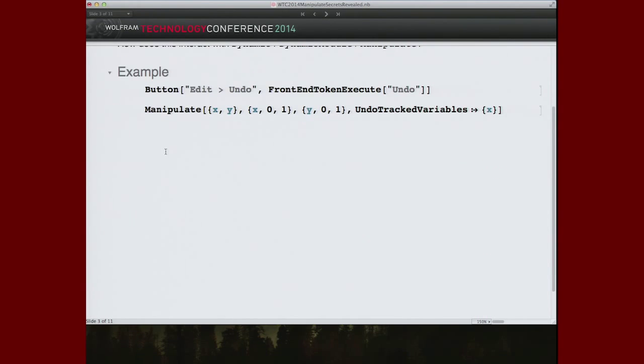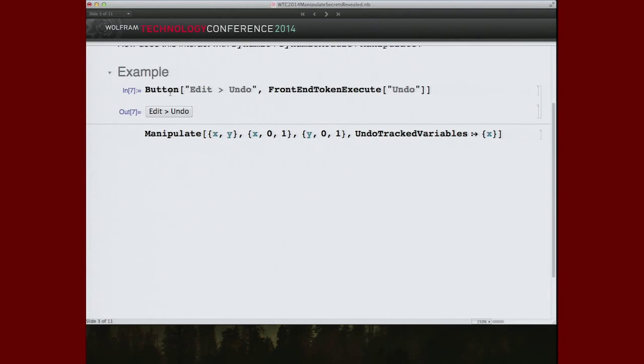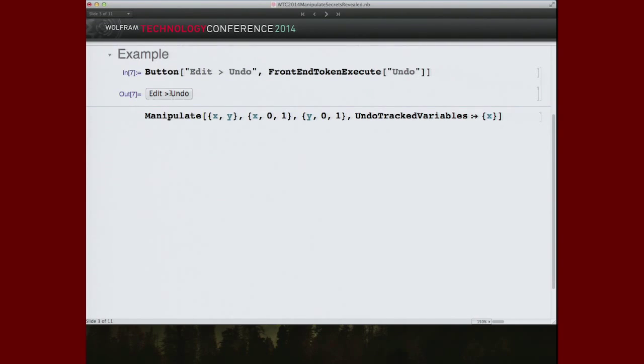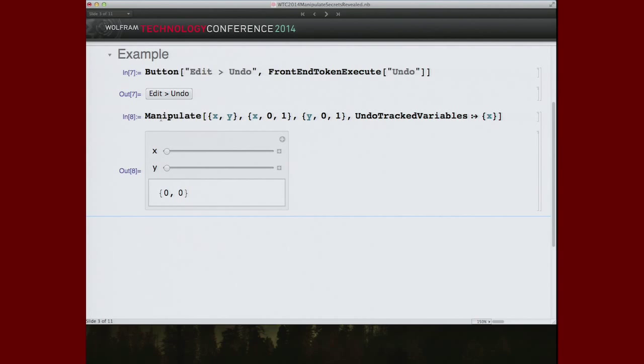So for example, here is a button that just for convenience does exactly what the undo menu does. And here's a manipulate one of whose variables is supposed to be aware of undo. Now what does that mean? Well, let's see. We change the value of x, we change y, change x, change y, and now we undo. And the changes to y have been left alone, but the value for x steps one step back in its own undo stack. We undo again, the value of x goes back to the previous state.